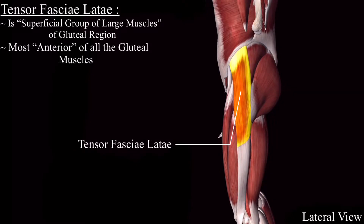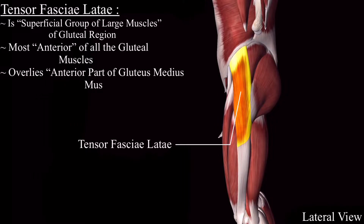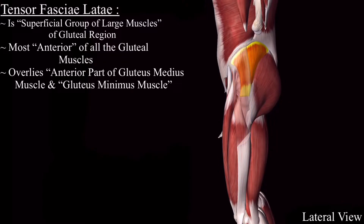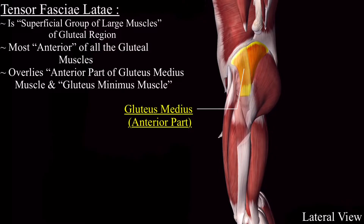This muscle overlies the gluteus minimus muscle and the anterior part of the gluteus medius muscle. This is the gluteus medius muscle, and the anterior part of the gluteus medius muscle is covered by the tensor fasciolata.